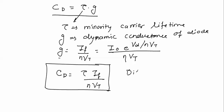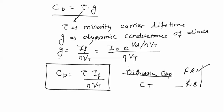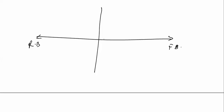Remember, Diffusion Capacitance Cd applies in the forward biased condition, while Transition Capacitance CT applies in the reverse biased condition. Both capacitances exist in the same diode, but if the diode is forward biased, Cd dominates, and if reverse biased, CT dominates. We can plot both capacitances on a graph with forward and reverse bias voltage on the x-axis and capacitance C on the y-axis — Cd dominates in the forward region and CT dominates in the reverse region.